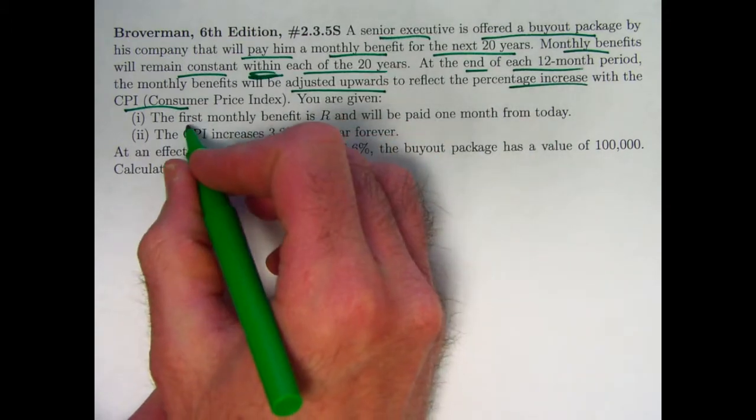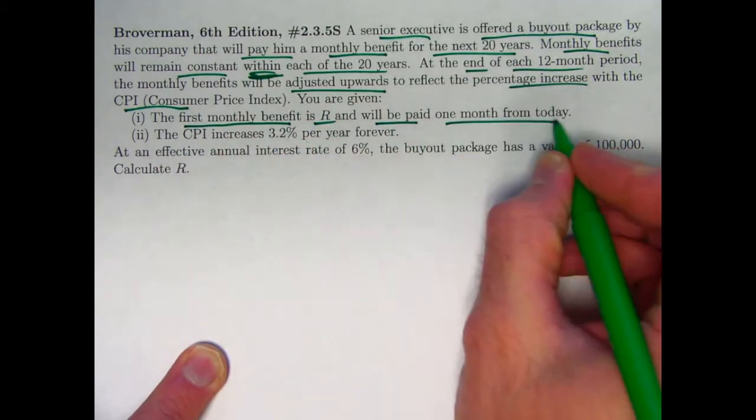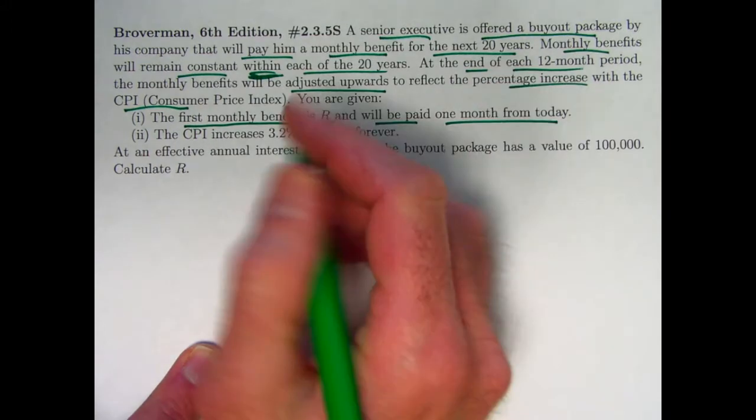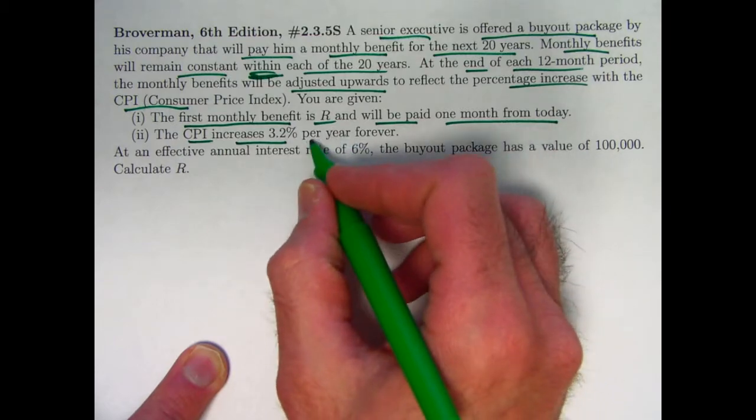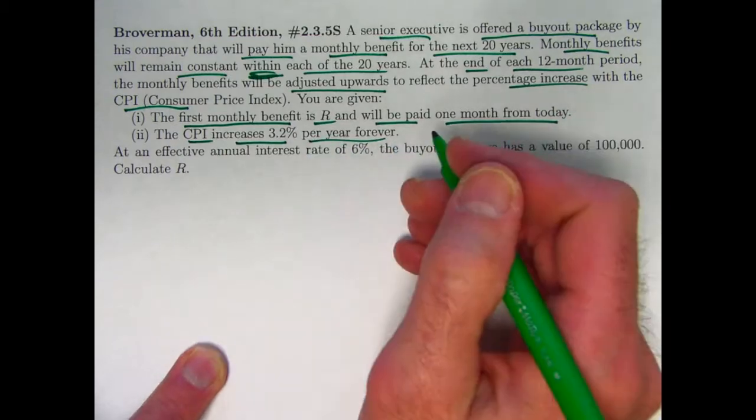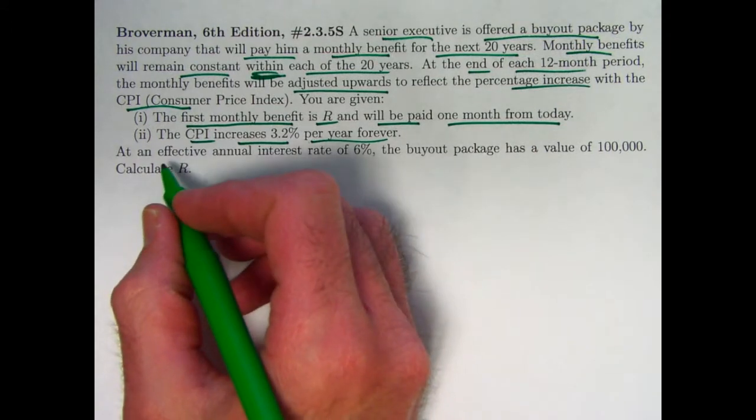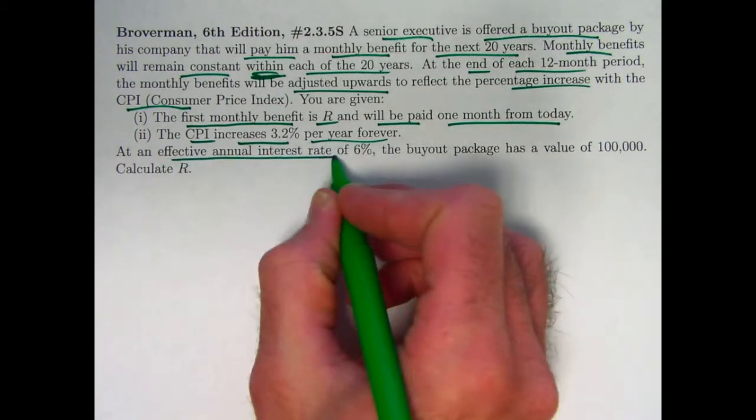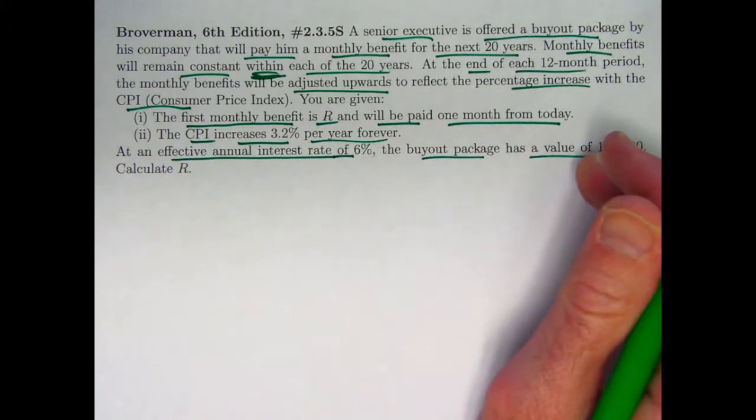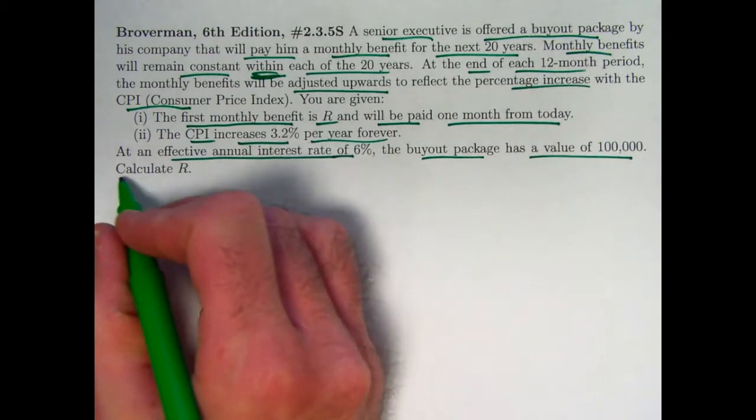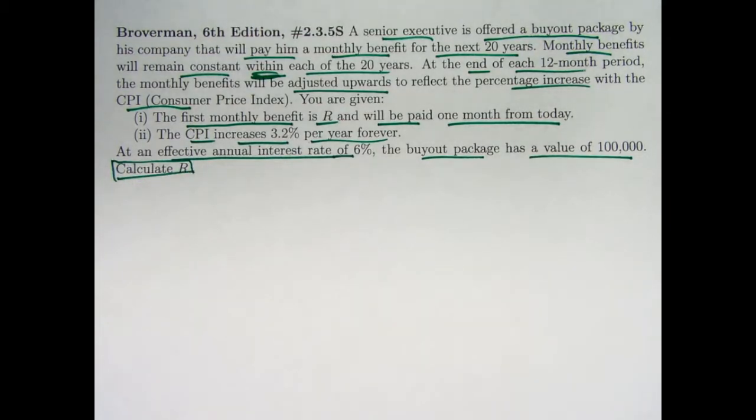You're given two things. First of all, that the first monthly benefit during the first year is R, and will be paid one month from today, so it's an annuity immediate, and the CPI is assumed to increase at a constant rate of 3.2% per year forever. Of course, that's not realistic, but hopefully it's not too far from being approximately true. At an effective annual interest rate of 6%, the buyout package has a value of 100,000, evidently meaning the present value at time zero is 100,000.